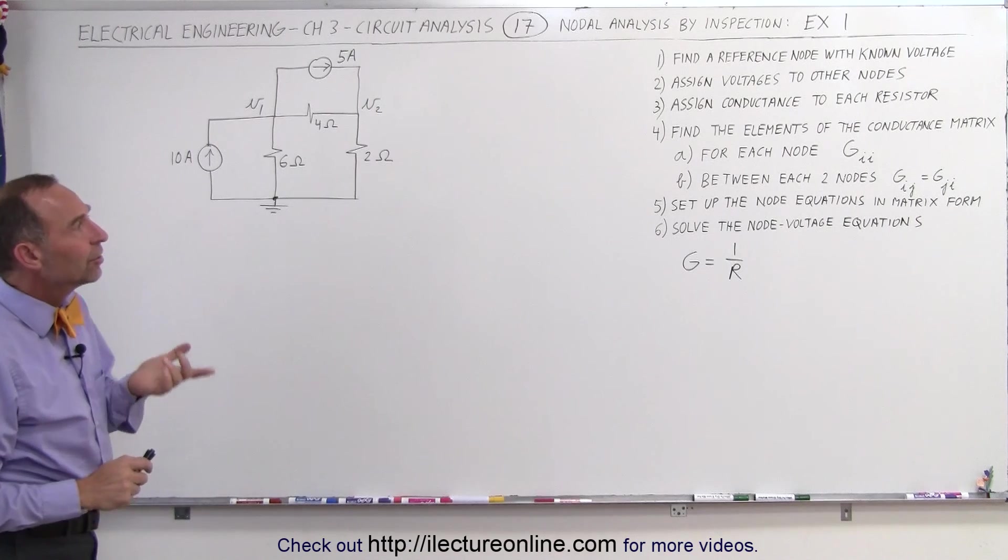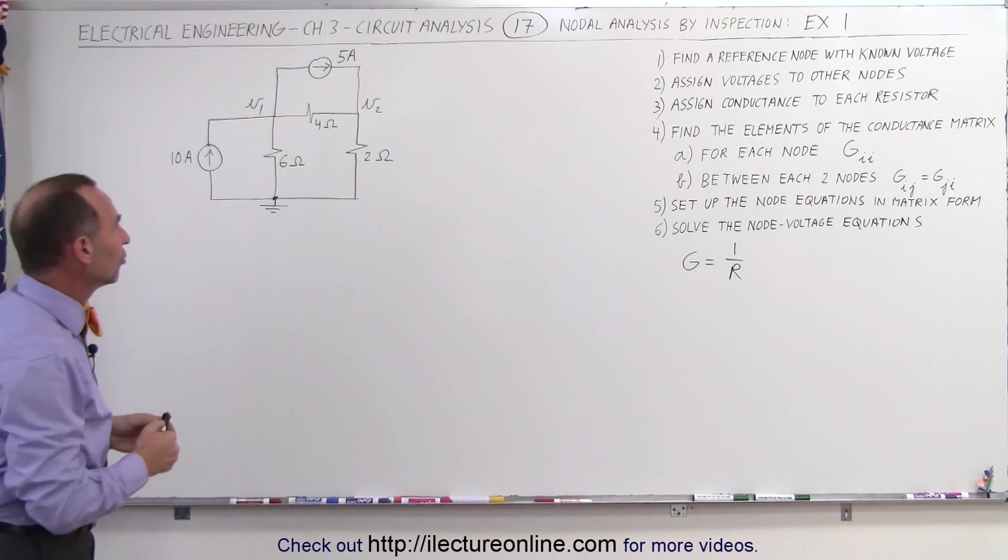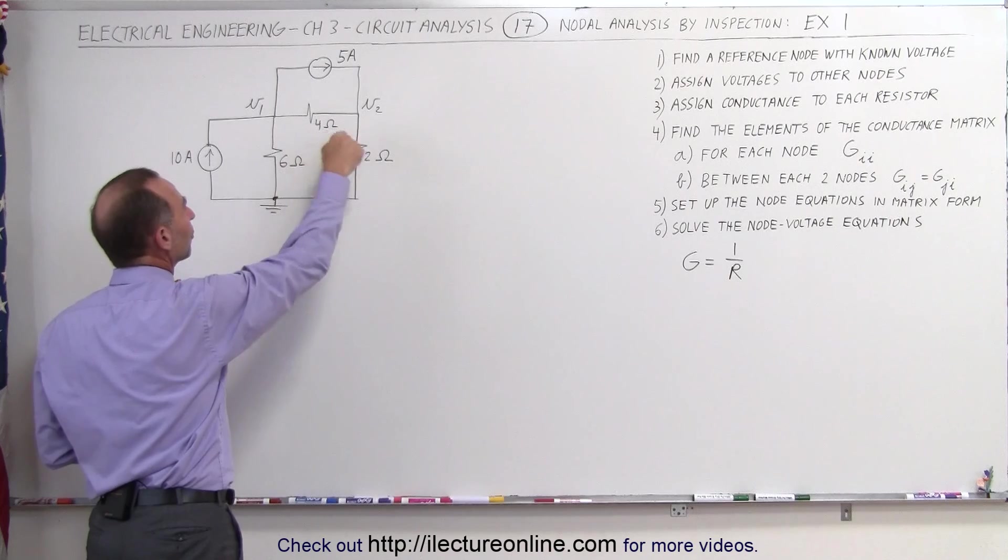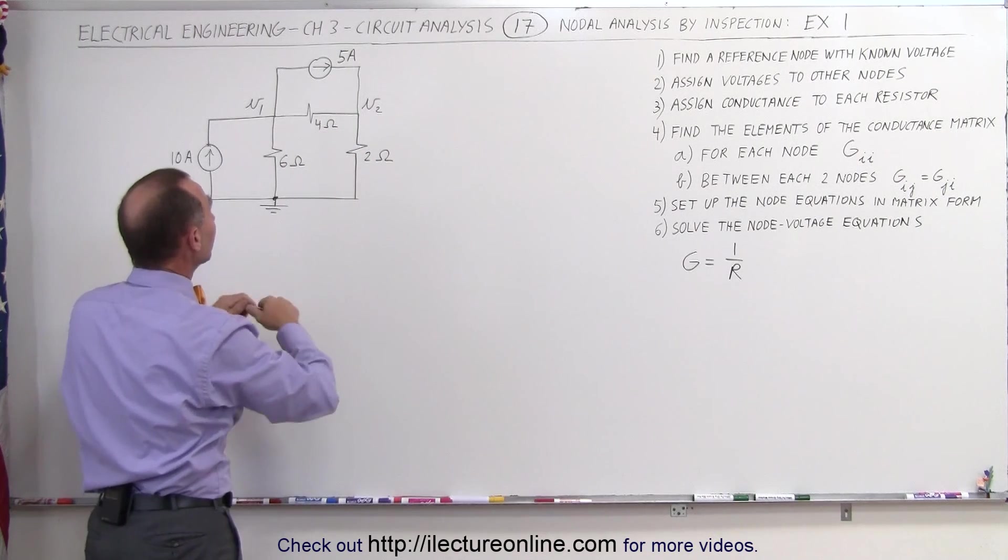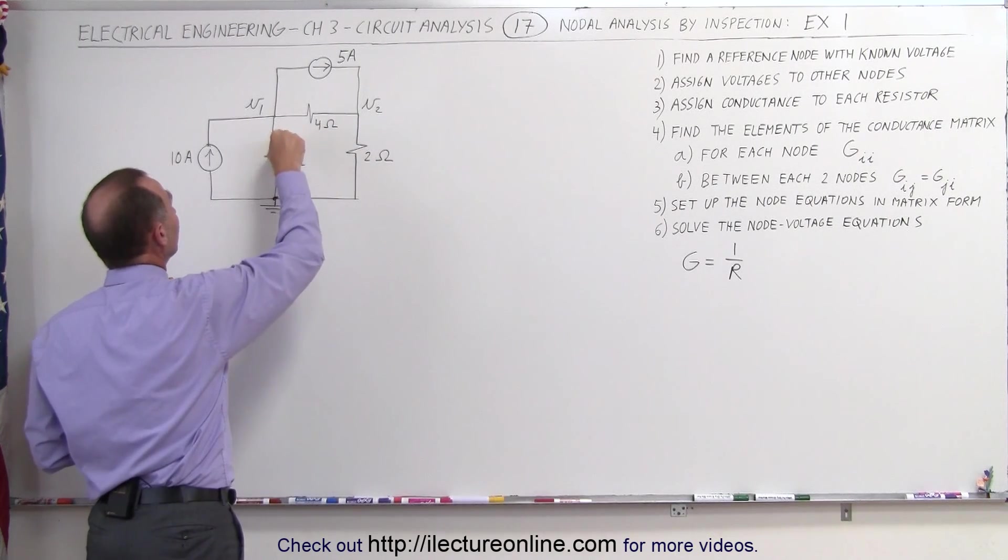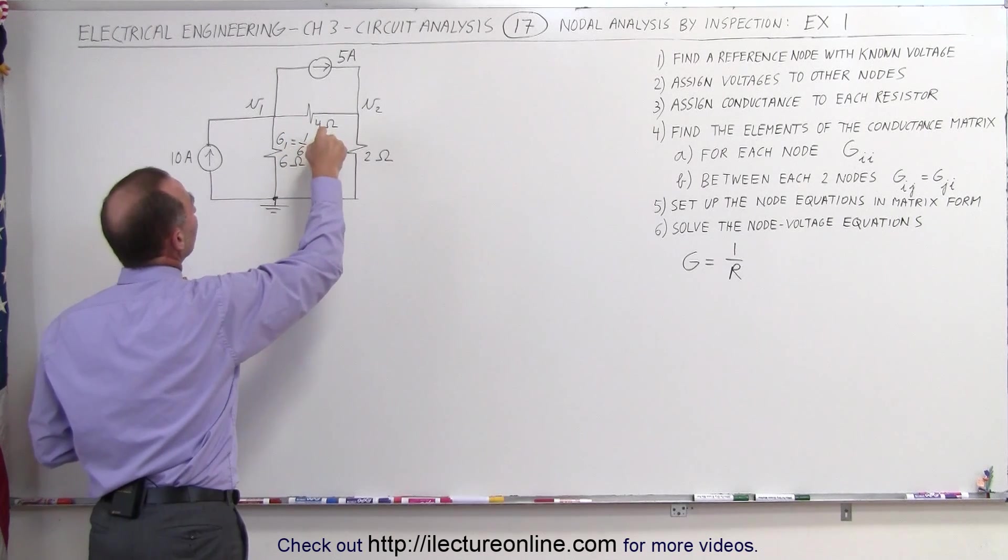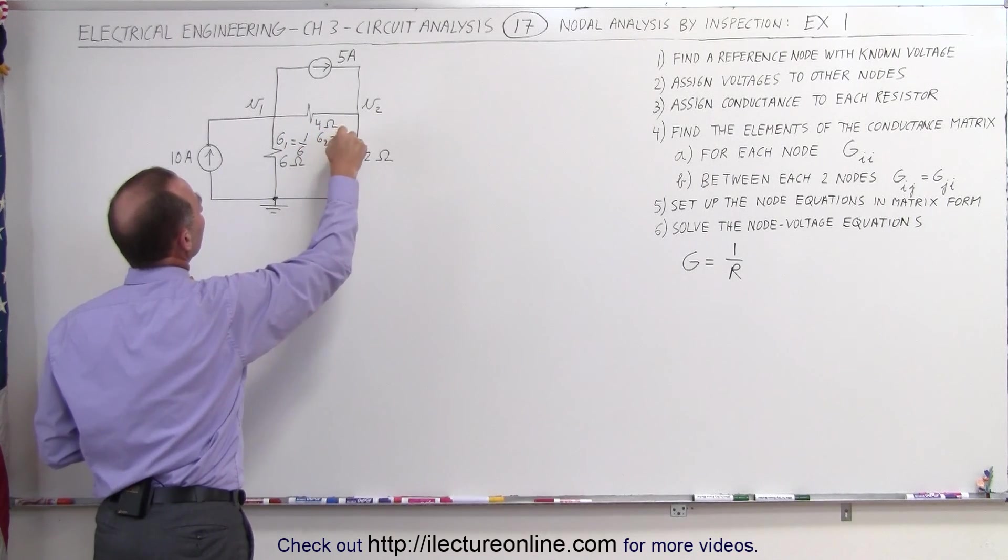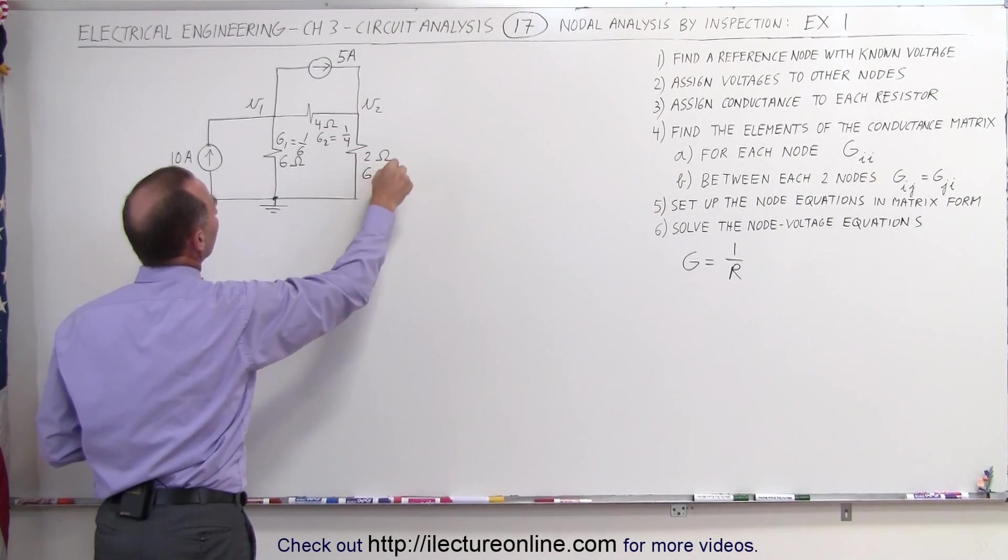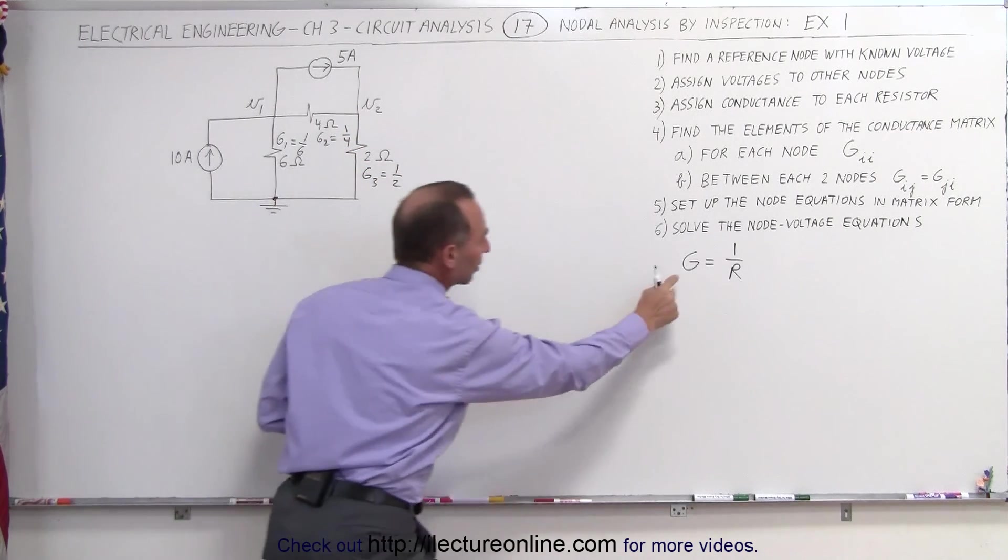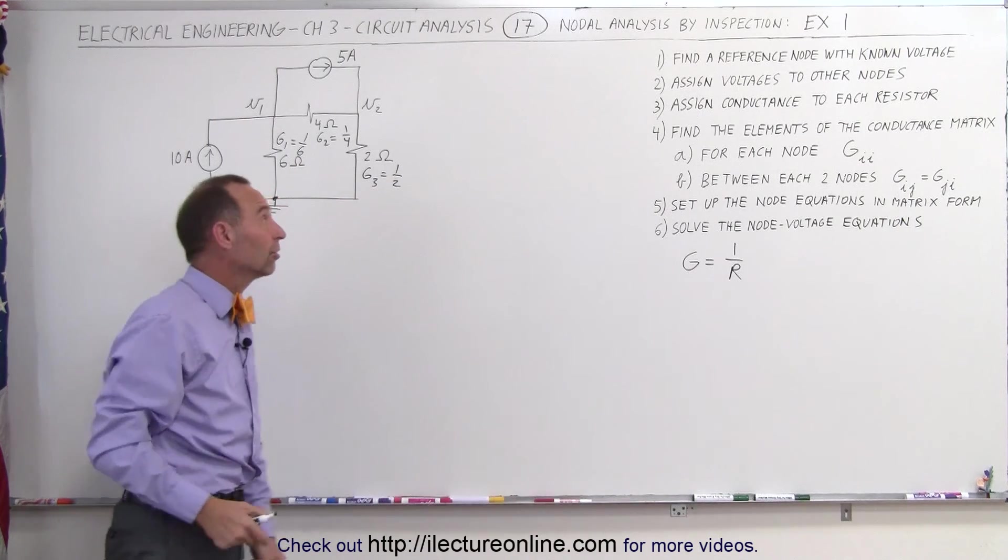Next step, assign conductances to each of the resistors. Notice we've given the resistor values, 6 ohms, 4 ohms, and 2 ohms, to find conductances. Then we can say that G1 here would be equal to 1 over 6, G2 would be equal to 1 over 4, and G3 would be equal to 1 over 2. Remember that the conductance is simply the inverse of the resistances.